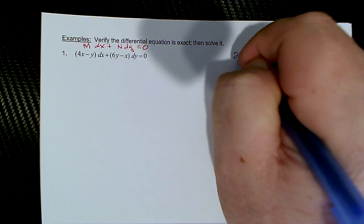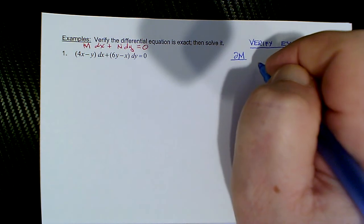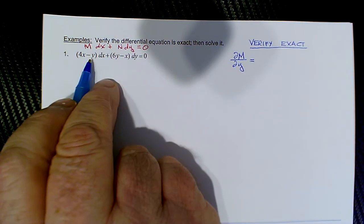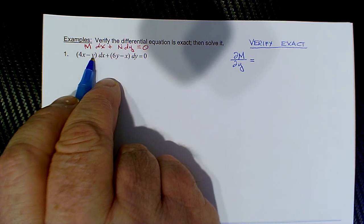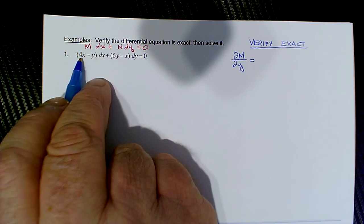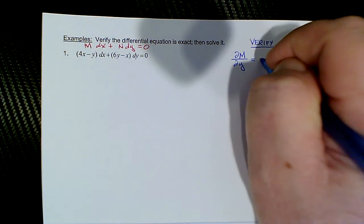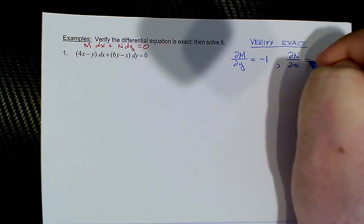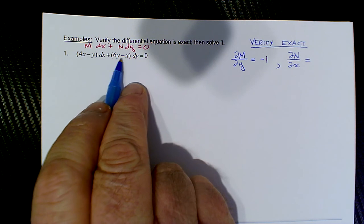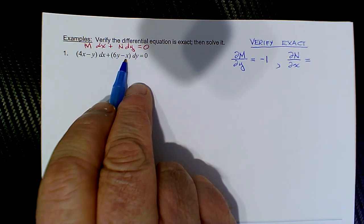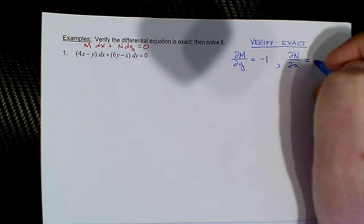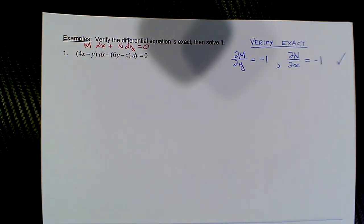Off to the side, let me verify that they're exact. So we calculate the partial of M with respect to y, and M is 4x − y. If we're taking the derivative with respect to y, x is held as a constant, so the derivative of 4x would be zero and the derivative of −y is −1. Then we calculate the partial of N with respect to x — we get −1 as well, so we put a check mark: they are exact.